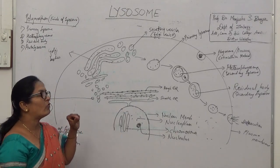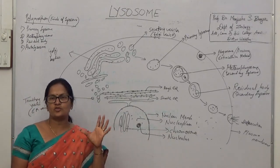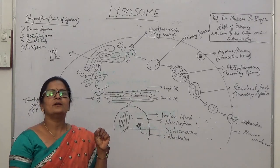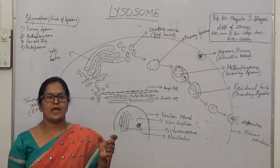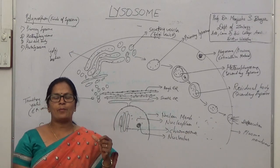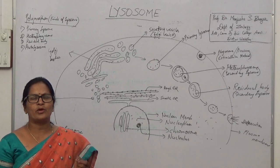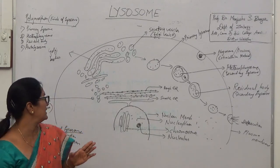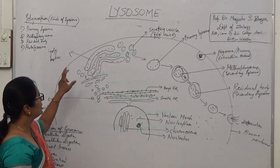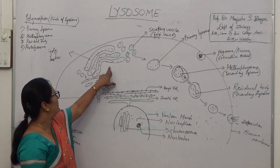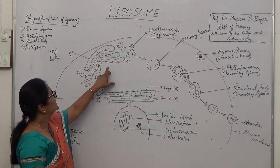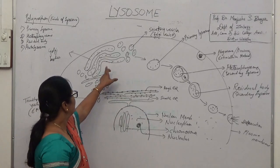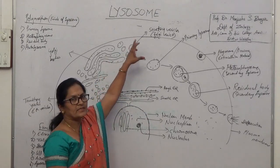Now we will see how is the structure of Lysosome, the ultrastructure of Lysosome. The structure of Lysosome is very simple. It is just a spherical structure having a lipoprotein membrane. The membrane is made up of lipid and protein, just similar to the chemical nature of the plasma membrane. This Lysosome usually originates from the Golgi complex. From the Golgi complex, some of the vesicles are budded off by pinching process, and these vesicles when they are budded off, it is called as secretory vesicles.